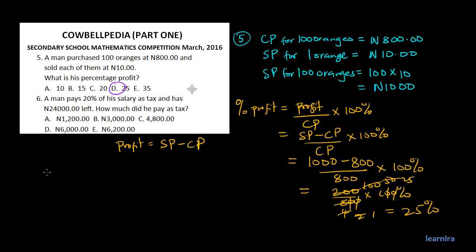Question 6: A man pays 20% of his salary as tax and has 24,000 naira left. What did he pay as tax? We don't know the man's salary, so let his salary be X.